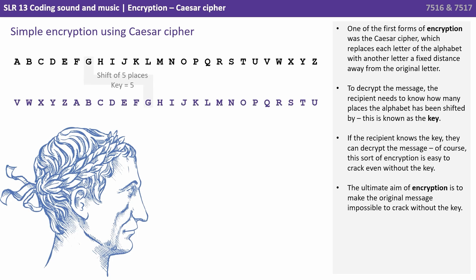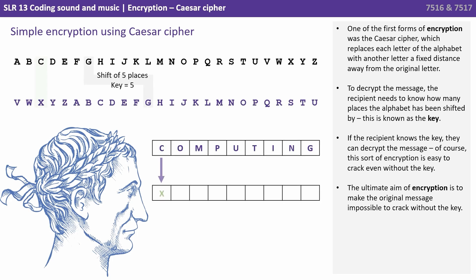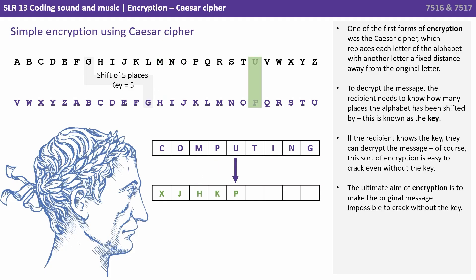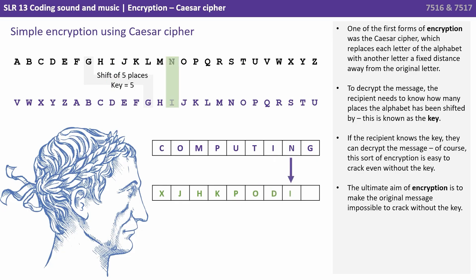One of the first forms of encryption was the Caesar cipher, which replaces each letter of the alphabet with another letter a fixed distance away from the original. To decrypt the message, the recipient needs to know how many places the alphabet has been shifted by, and this is known as the key. If the recipient knows the key, they can decrypt the message.